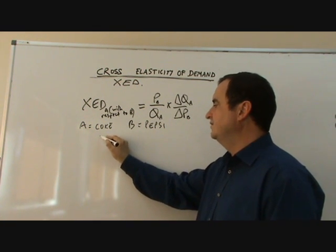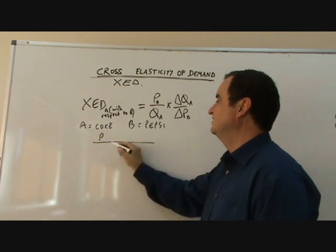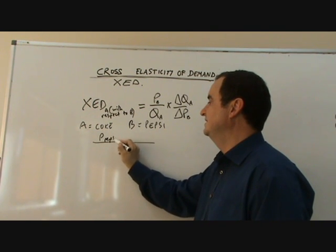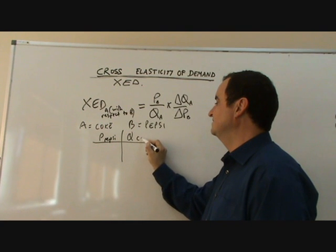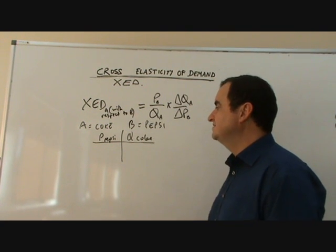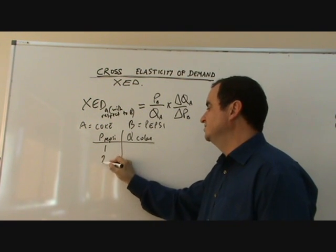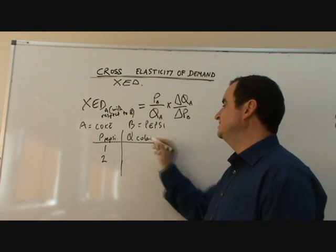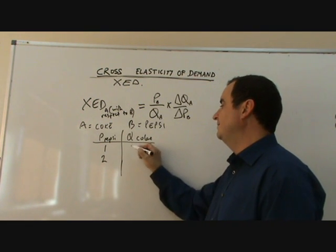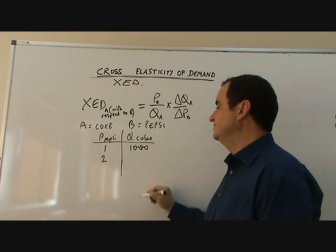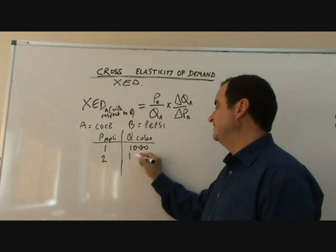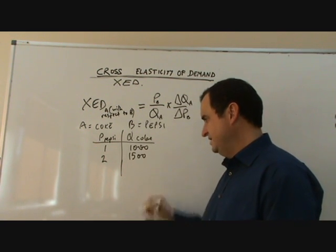We found that when the price of Pepsi and the quantity of Coke, well, when the price of Pepsi went from 1 to 2, the quantity of Coke bought went from 1,000 to 1,500. Let's work with that.